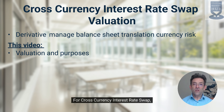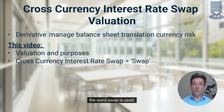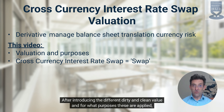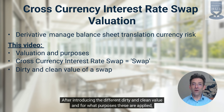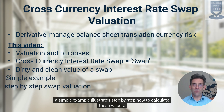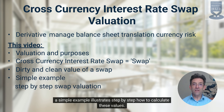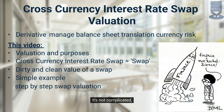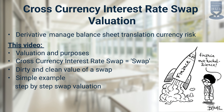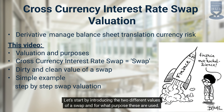For cross-currency interest rate swaps, the word 'swap' is used. After introducing the different dirty and clean values and for what purposes these are applied, a simple example illustrates step-by-step how to calculate these values. It's not complicated — finance and not rocket science. Let's start by introducing the two different values of a swap and for what purpose these are used.